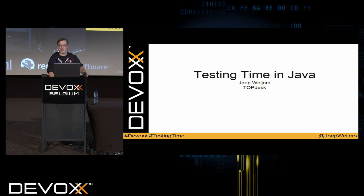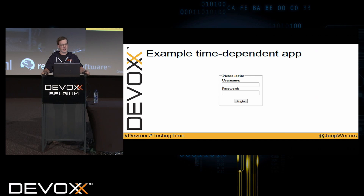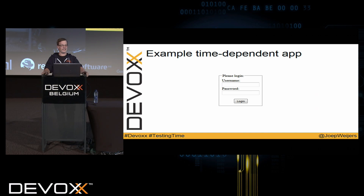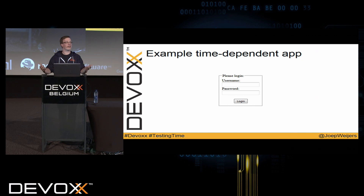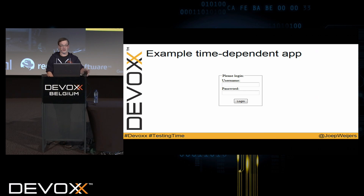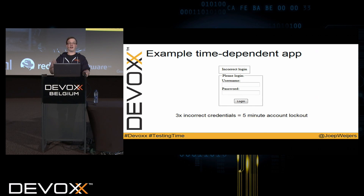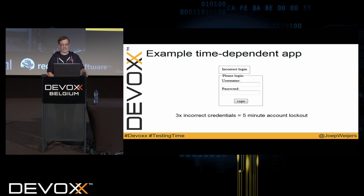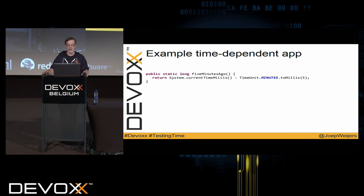I created a simple, small, time-dependent application — it's a login system. Really simple, not very secure, but I did include one of the OWASP recommendations: logging out a user so his password can't be brute-forced after too many incorrect logins. If you enter incorrect credentials three times, your account gets locked for five minutes, so you can't log in, not even with the correct credentials. The method I use for this is called 'five minutes ago', to determine if five minutes have passed, and this is the method I'll look into for the unit tests.